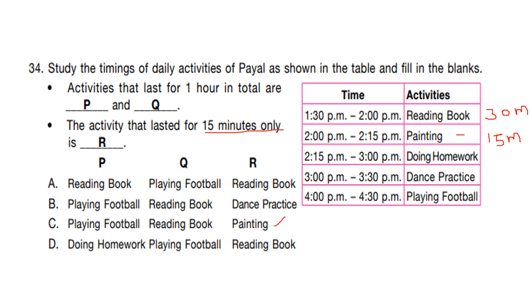P is playing football and Q is dance, each taking 30 minutes, so P plus Q together is 60 minutes = 1 hour. The answer is option C.